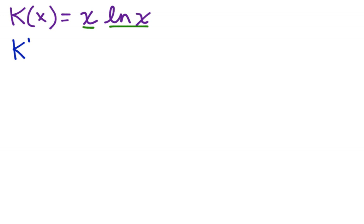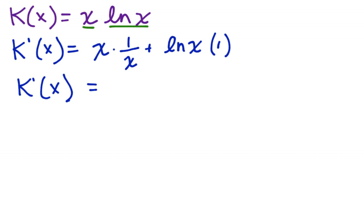So, k prime of x is equal to first, derivative of the second. Well, derivative of natural log of x is equal to 1 over x, plus the second times derivative of the first. So, my rewrite is just 1 plus ln x.